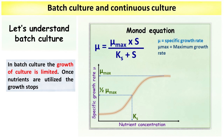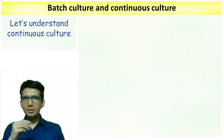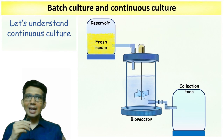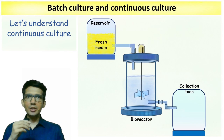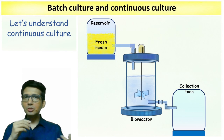One drawback of batch culture is that once all the nutrients are utilized, the growth of cells as well as product formation eventually stops. In an industry, you would always desire continuous production of the product as it is economically beneficial. To achieve this, bioreactors are slightly modified so that they can be operated in a continuous manner.